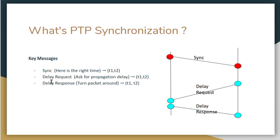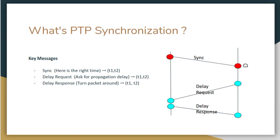The next two packets are delay request and delay response. Even if you can set the clock on the right side, there are delays in the network, and based on how long it takes to go from point A to point B, those delays can offset the time. You want to know what the delays are so you can compensate on the right side and get the accurate time — precisely matching the time on the left side, independent of network delay.